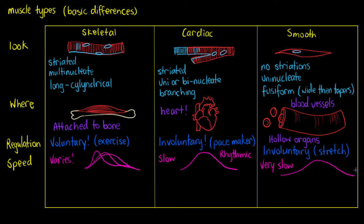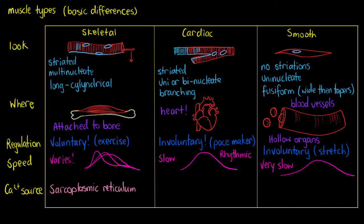The last topic is where each muscle type gets its calcium, since calcium is needed to initiate contraction. For skeletal muscle, calcium comes mostly from the sarcoplasmic reticulum — the network of tubules wrapped around individual myofibrils. It wraps around each myofibril and supplies calcium when the cell is ready to contract. Cardiac muscle also has a sarcoplasmic reticulum, though it's much less dense than in skeletal muscle.